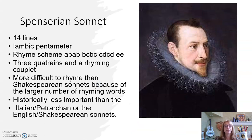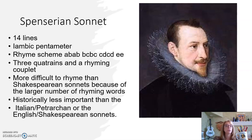Another very famous English sonneteer — not nearly as famous as Shakespeare, of course — is Sir Edmund Spencer. He also wrote 14-line poems in iambic pentameter, but he came up with his own unique sonnet structure. His rhyme scheme is A-B-A-B-B-C-B-C-D-C-D-C-E-E. This is an interlocking structure in which one quatrain is locked into the next, and so on — three quatrains and a rhyming couplet. It's more difficult to rhyme than the Shakespearean sonnet because there's a larger number of rhyming words required.